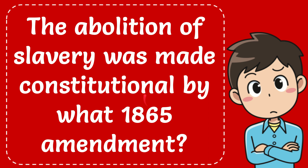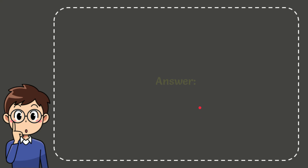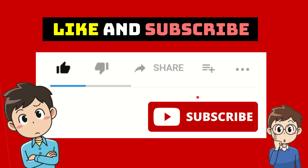In this video I'm going to give you the answer to this question. The question is: the abolition of slavery was made constitutional by what 1865 amendment? The correct answer to the question is 13.